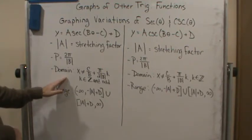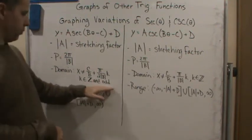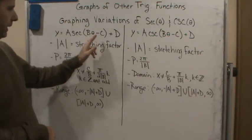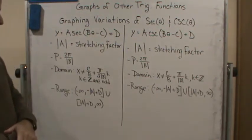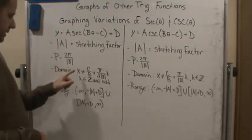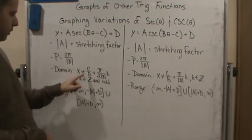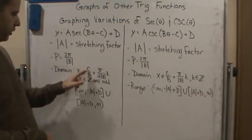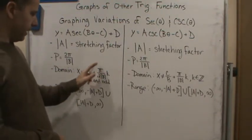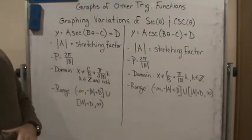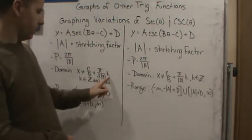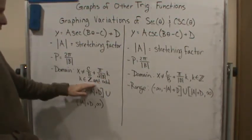The domain of the secant function, as you recall, in this case we're dealing with b and we're dealing with a horizontal shift. The domain is going to be all real numbers except for when x equals the ratio of c over b, the phase shift, plus a multiple of π over 2b. And that's where k is going to be an odd integer.